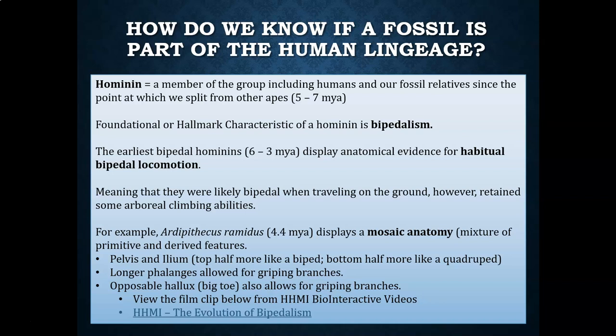Ardipithecus ramidus has a pelvis where the top half — the ilium — looks much more like a biped, more rounded and bowl-shaped, and the bottom half of the pelvis looks more like a quadruped. So the pelvic girdle itself is quite literally a mosaic aspect of Ardipithecus's anatomy.